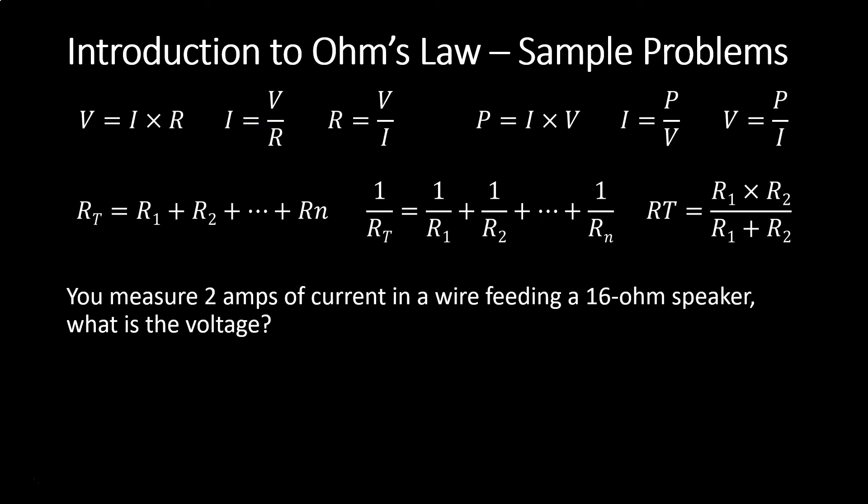The second problem: you measure 2 amps of current in a wire feeding a 16 ohm speaker — what is the voltage? Current is given at 2 amps, and the 16 ohm speaker is the resistance; you need to solve for voltage. Using the equation voltage equals current times resistance, 2 amps times 16 ohms gives a 32 volt signal.